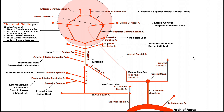The blood supply to the nervous system is going to come from really two vessels: the internal carotid artery, which is going to be a major player, and then also the vertebral arteries.